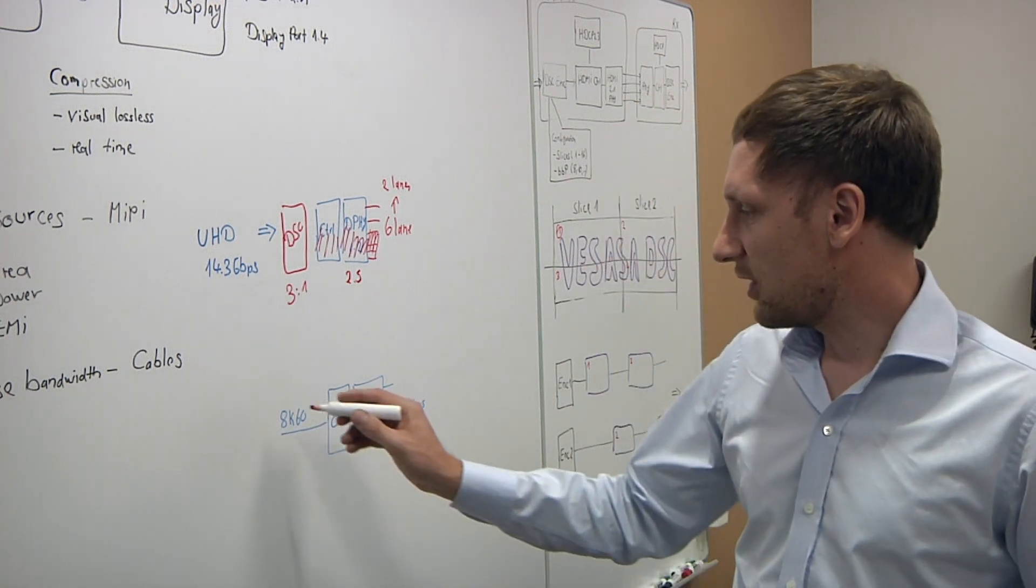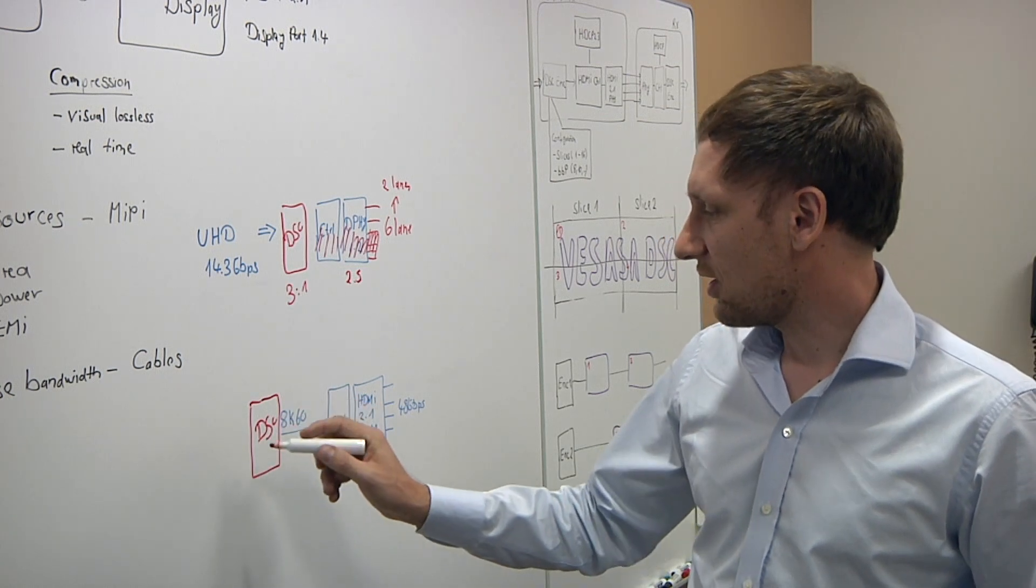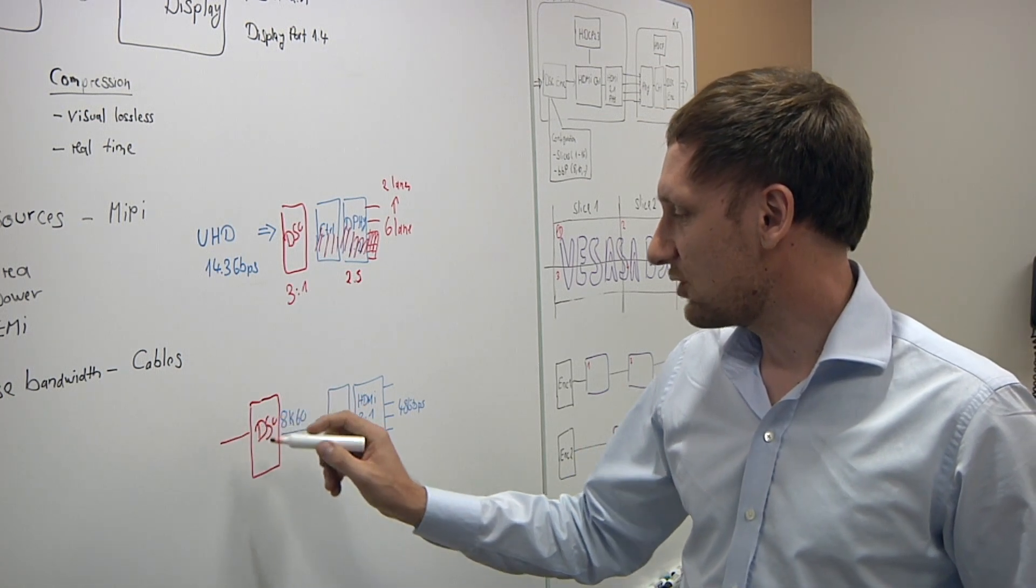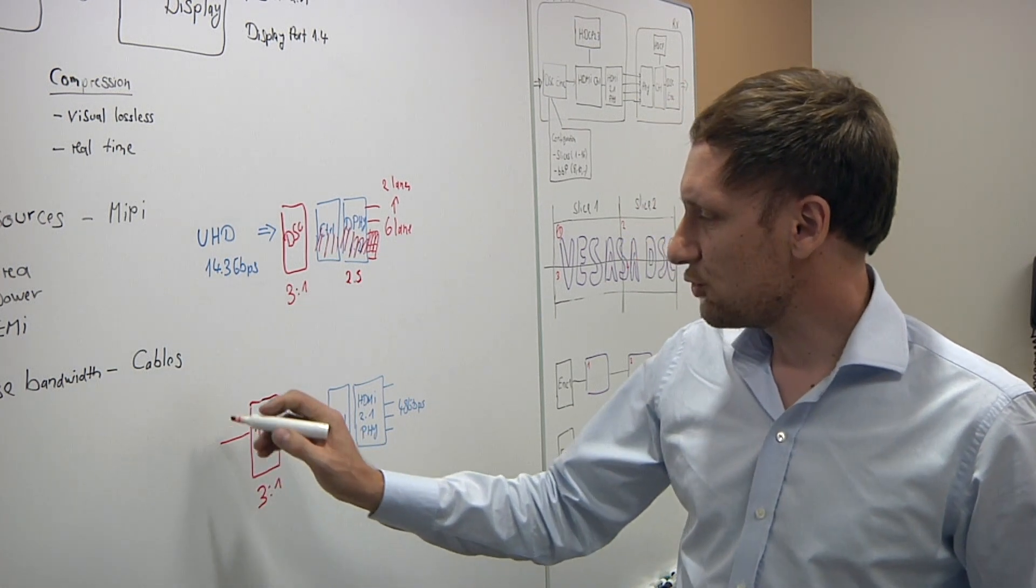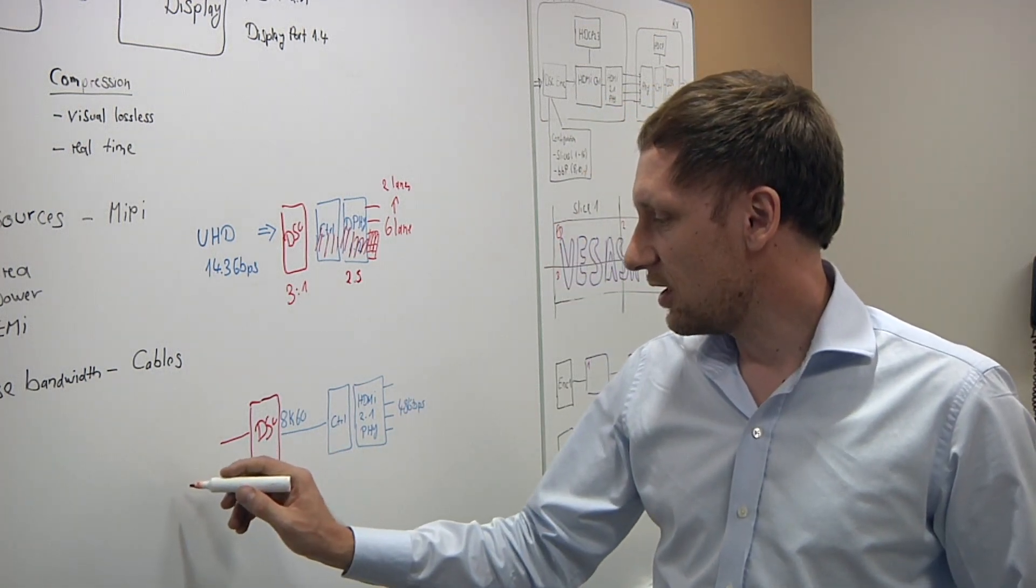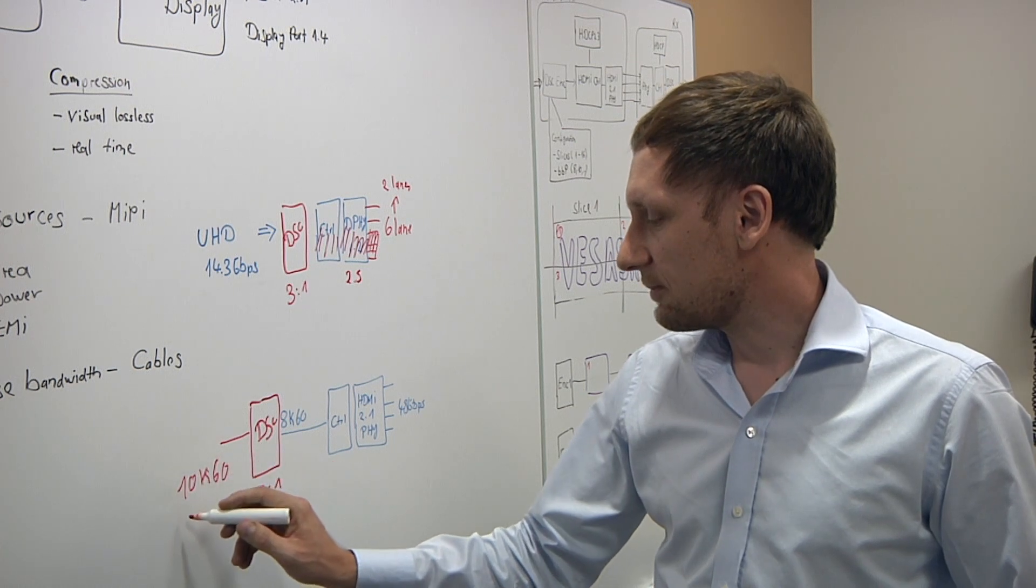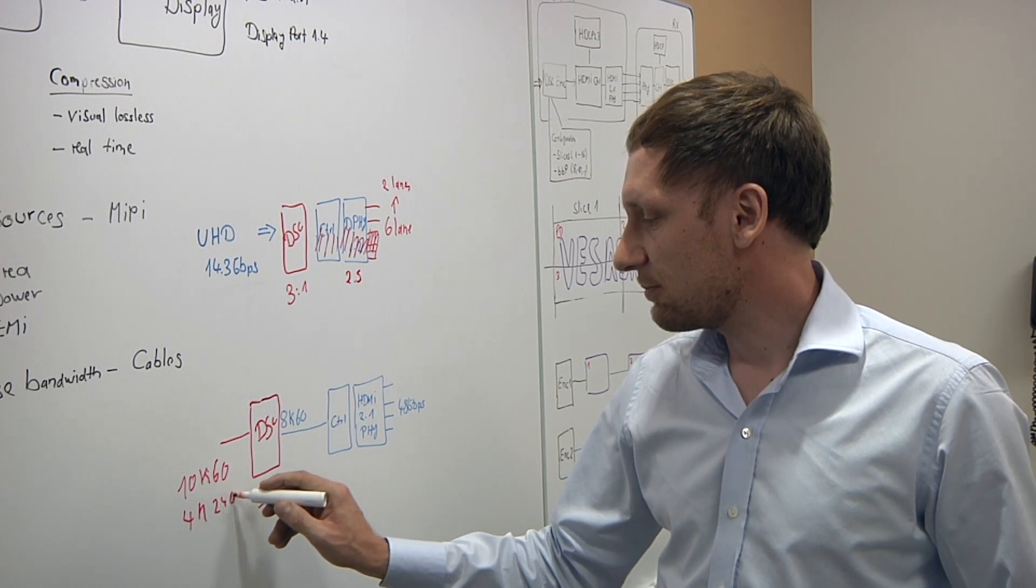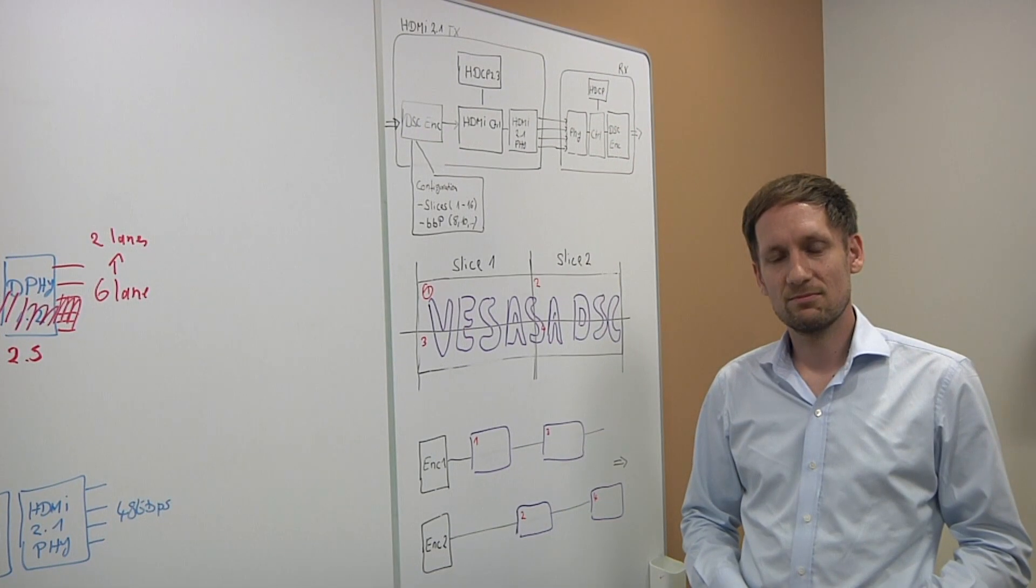So if you now add a DSC encoder in here as well, you're able to increase the bandwidth that you're able to transmit over the lanes by compression. Again, a factor of 3 to 1. And you're able to do use cases that you are not able to physically do over the wired connection, like for example, 10K 60 or 4K 240, which might be at some point interesting for gaming applications. So these are some fairly substantial changes in resolution. As a matter of fact, we probably haven't seen this kind of resolution jump in years.